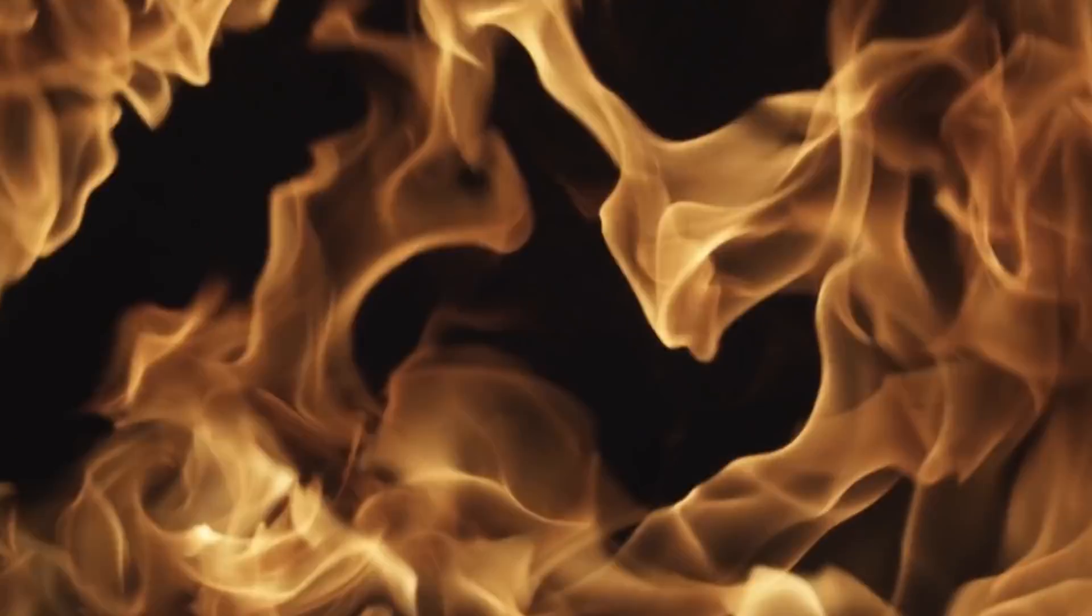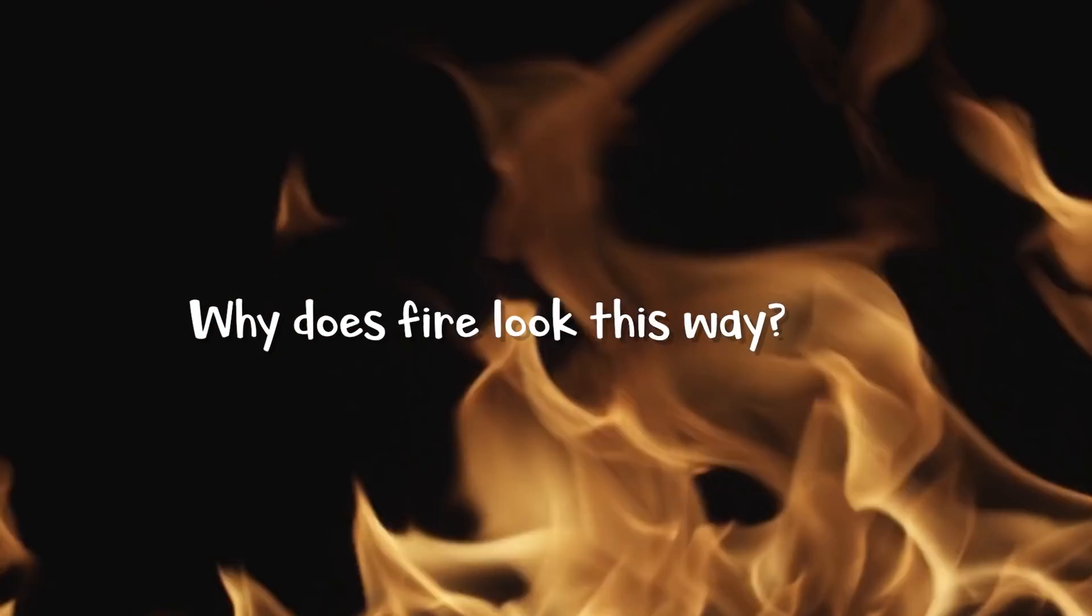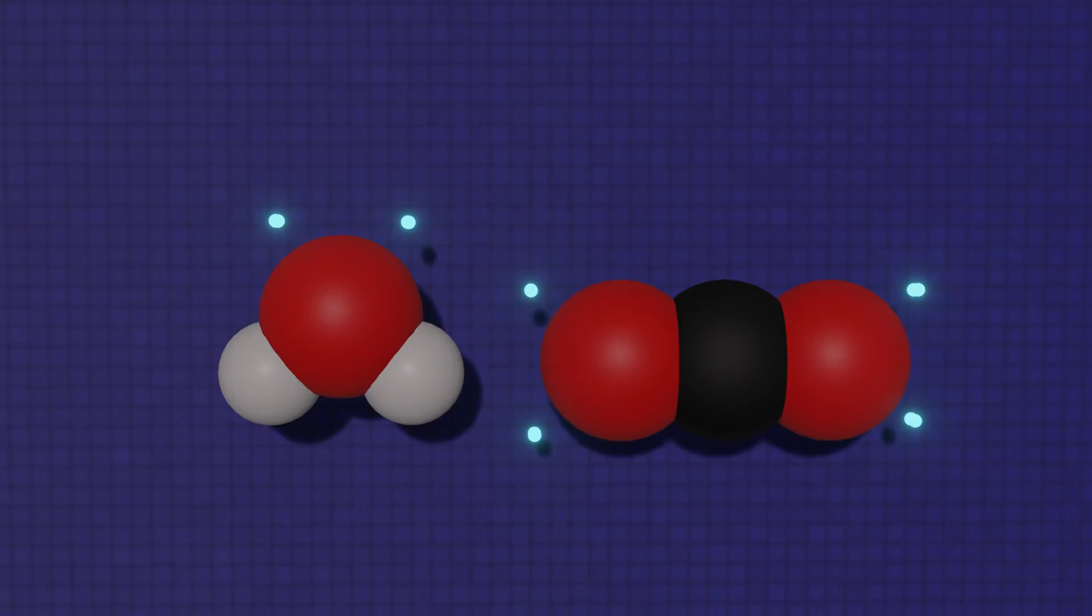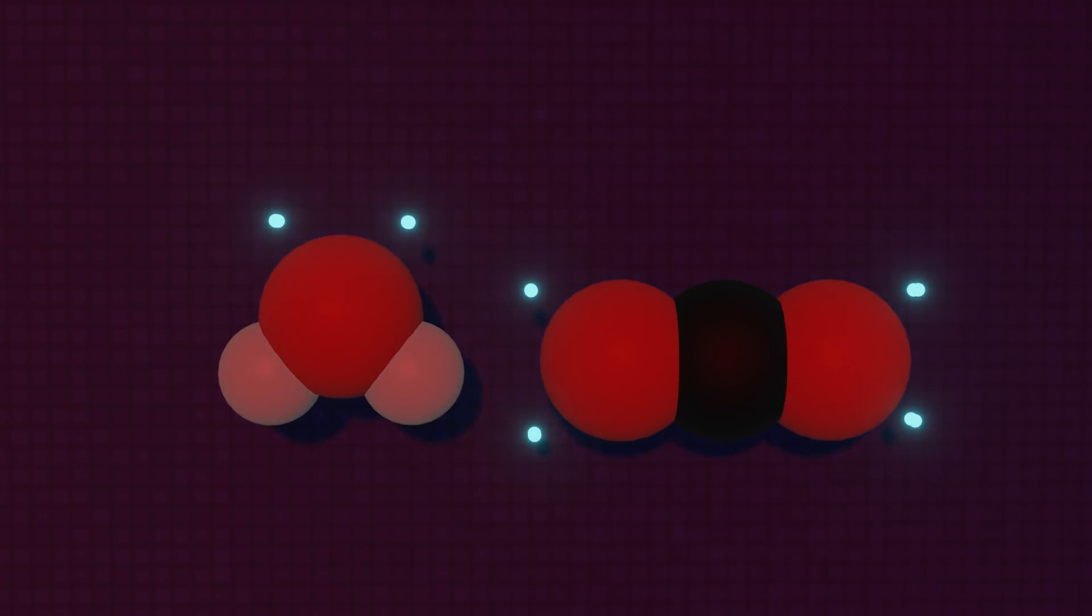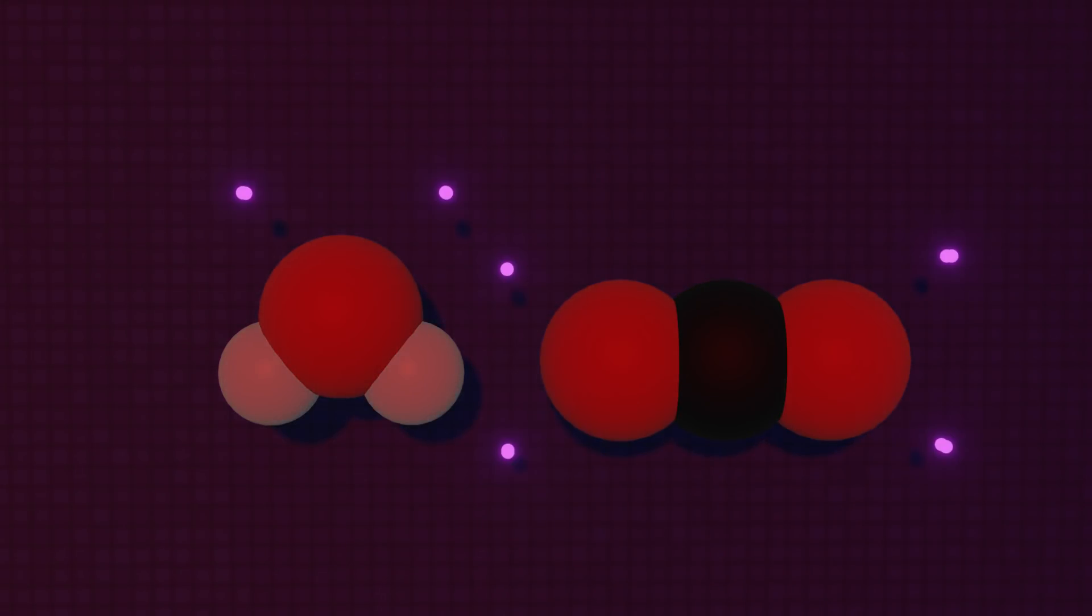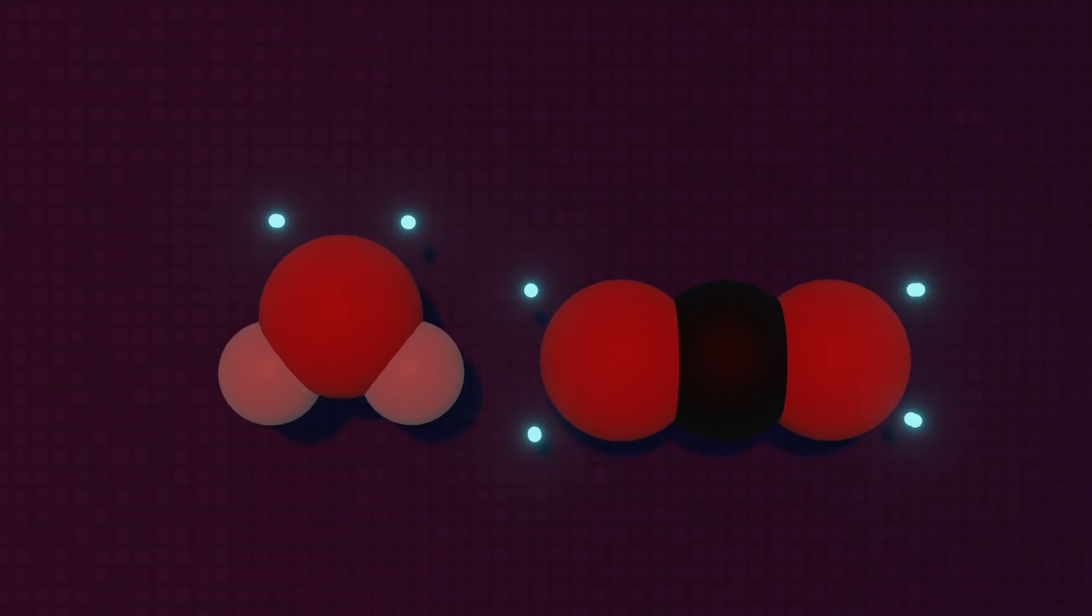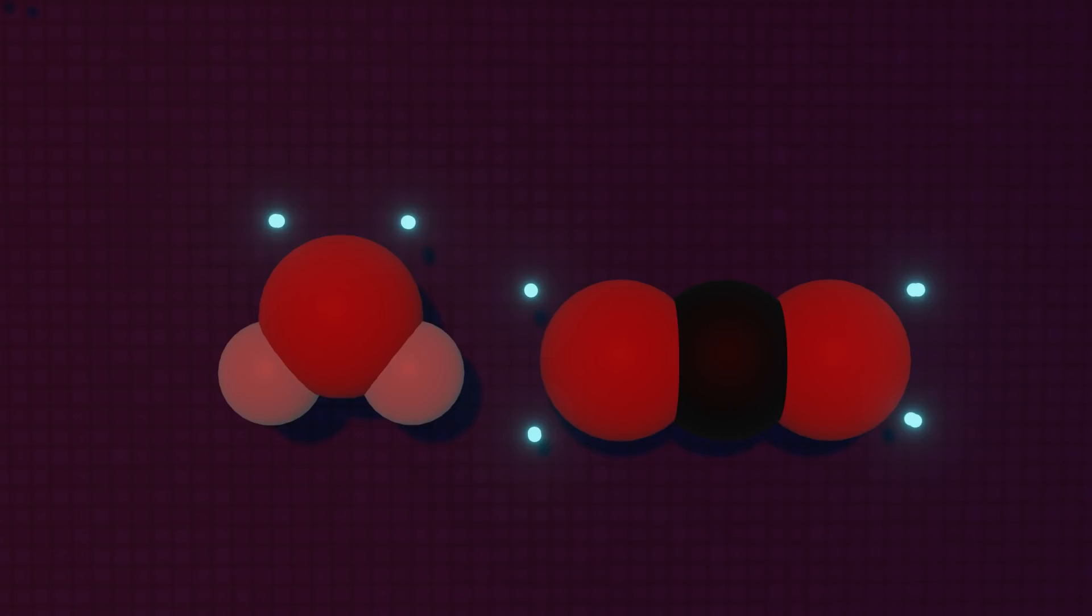Now that we understand why fire occurs, the last question we need to answer is why does fire look the way it does? The light from fire is caused by black body radiation. This phenomenon is discussed in my previous video on light, but essentially what happens is that the heat from the fire excites the electrons within the water and carbon dioxide molecules. But this isn't enough to dissociate them or break the bonds. So these excited electrons return to the ground states and as they do it, they release the excess energy in the form of light.